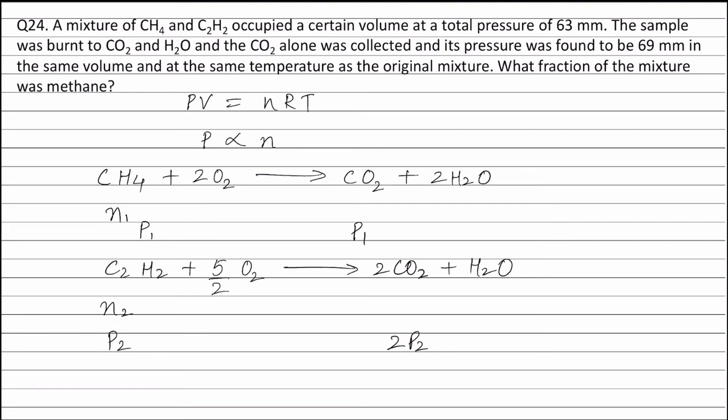According to the question, the pressure exerted by CH4 and C2H2 is 63 mm, that is P1 plus P2 equals 63. Let this be equation 1. The pressure exerted by CO2 is 69 mm. Therefore, P1 plus 2P2 equals 69. Let this be equation 2.